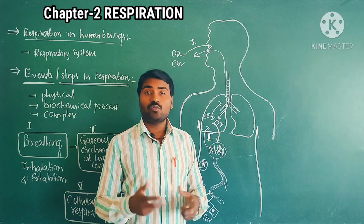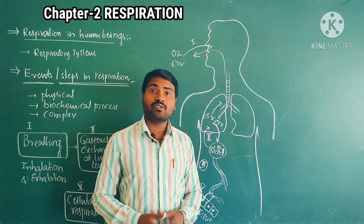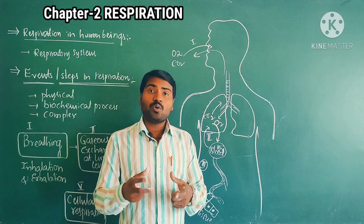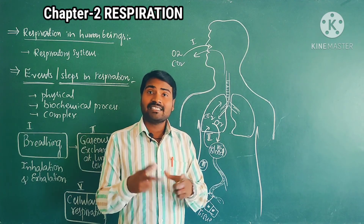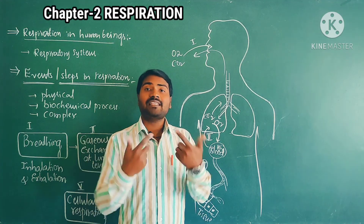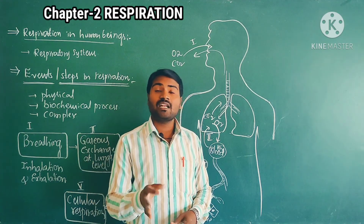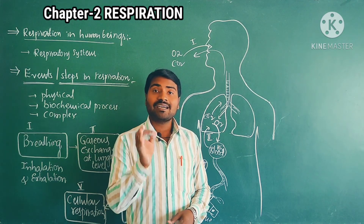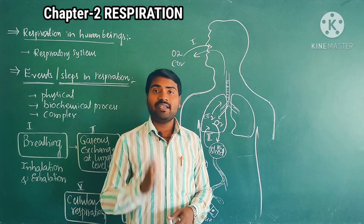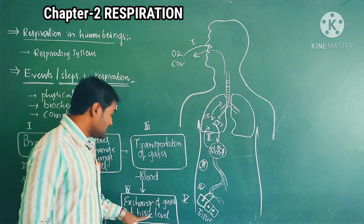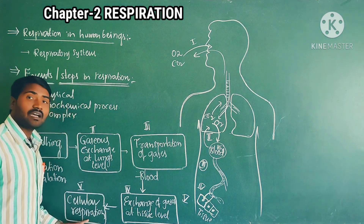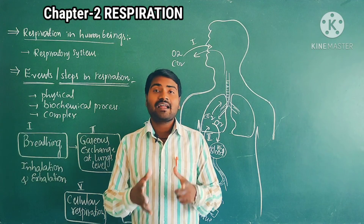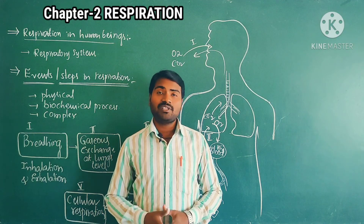The cell receives oxygen, and using that oxygen the glucose breakdown occurs inside the cell. This event is called cellular respiration. It is the fifth event. So these are the events of respiration.